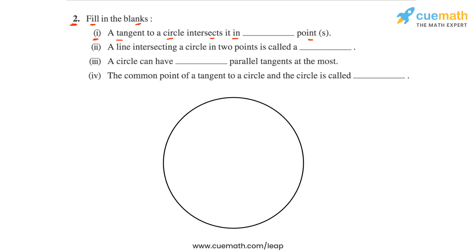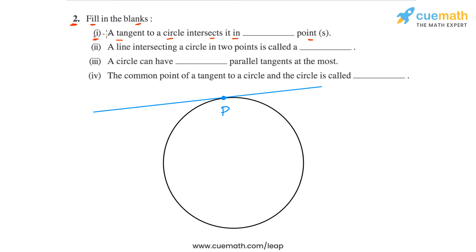For any circle, if we draw a tangent, it just touches that circle at one point. So for this circle, let's draw a tangent — it touches the circle at point P. The tangent touches, or intersects, the circle at exactly one point. So the answer for this statement is one.